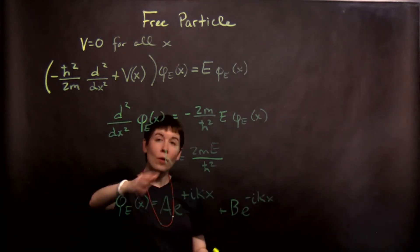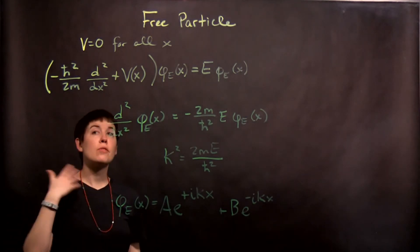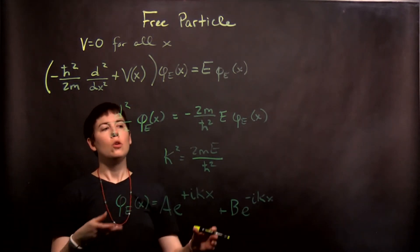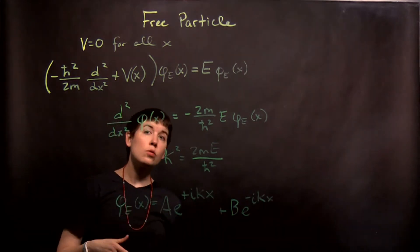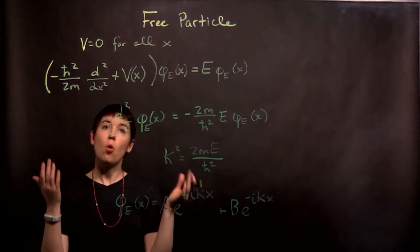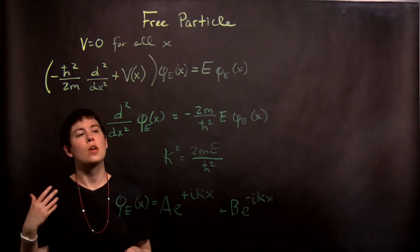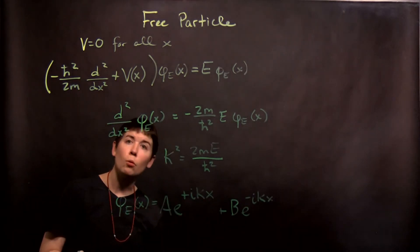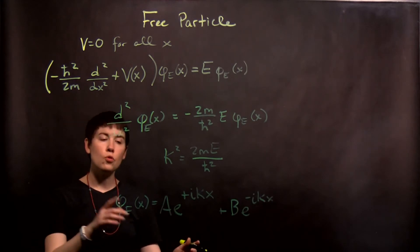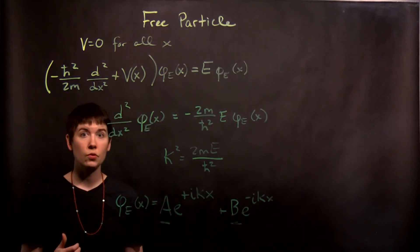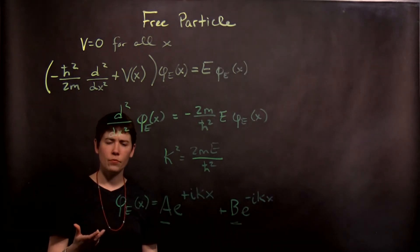So, great, we have already done this, but for the infinite well, we then said we can rewrite this as sine and cosine. Based on the coordinate system we're choosing, if we set one of those walls to be zero, we have boundary conditions, we can throw one term away, we can normalize it. So normally, where did these coefficients come from? Boundary conditions and normalization.